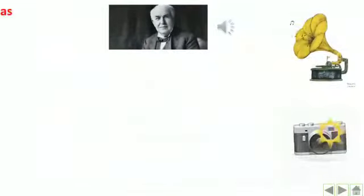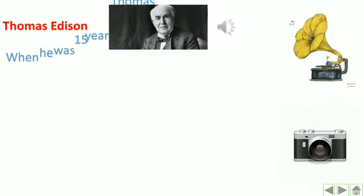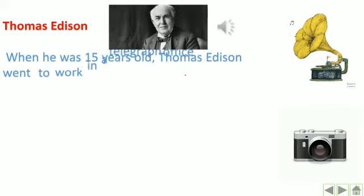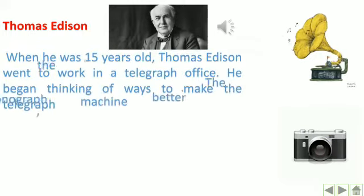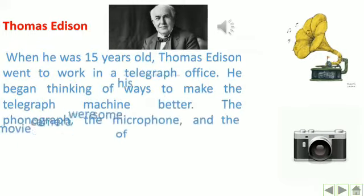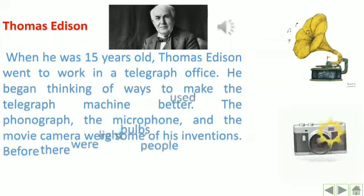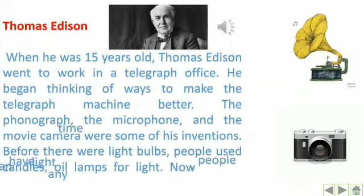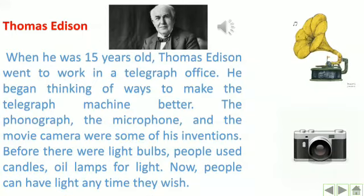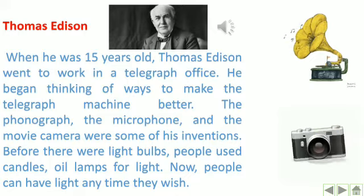Thomas Edison: when he was 15 years old, Thomas Edison wanted to work in a telegraph office. He began thinking of ways to make the telegraph machine better. The phonograph, the microphone, and the movie camera were some of his inventions. Before there were light bulbs, people used candles and oil lamps for light.